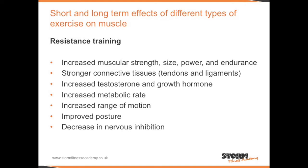Short- and long-term effects of different types of exercise on muscle — resistance training: resistance training can lead to increased muscular strength, size, power and endurance, stronger connective tissues including tendons and ligaments, increased testosterone and growth hormone, increased metabolic rate, increased range of motion, improved posture, and a decrease in nervous inhibition.